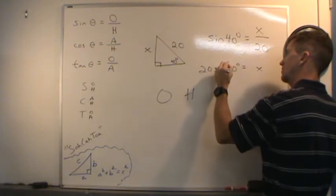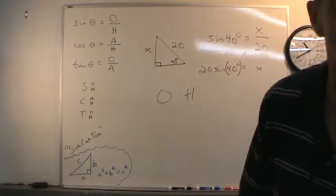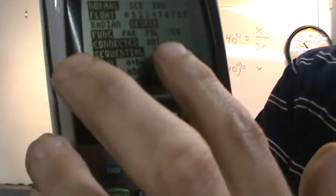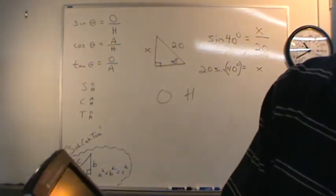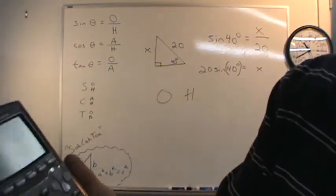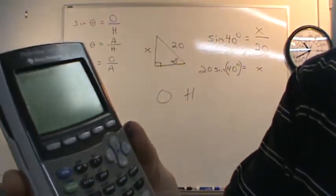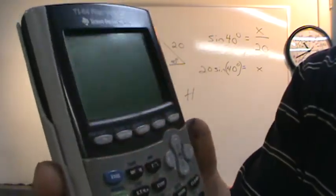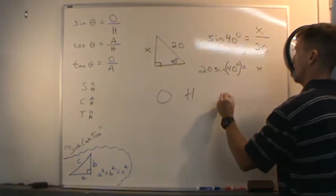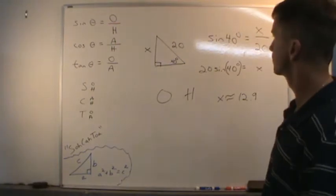On your calculator, make sure it is in degree mode — hit the mode button and confirm degree is selected. Then type 20 times sine of 40 and hit enter. We get approximately 12.85. Rounding to the tenths place, x is roughly 12.9.